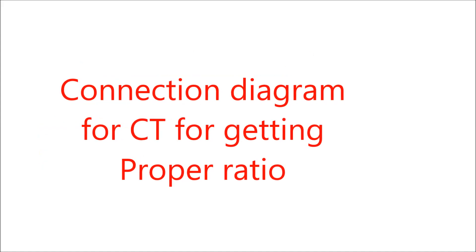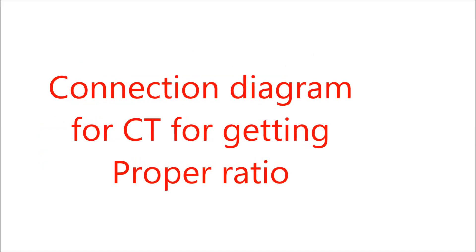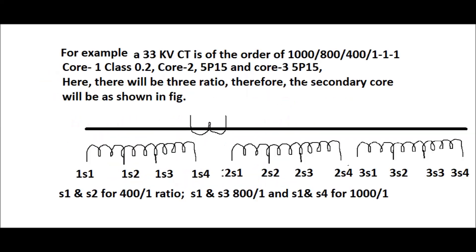Connection diagram for a CT. Here an example has been shown for 33 kV CT connection diagram. The CT ratio is 1000 by 800 by 400 by 1 by 1 by 1. In this case, core 1 is class 0.2, core 2 is 5P15 and core 3 is 5P15. Here core 1 is used for metering purpose.